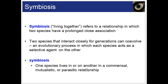A symbiosis refers to a relationship in which two species have a prolonged, close association. The two species that interact closely for generations can co-evolve, which is an evolutionary process in which each species acts as a selective agent on the other. For symbiosis, one species lives in or on another in a commensal, mutualistic, or parasitic relationship, so there's a range of helpful and harmful effects.